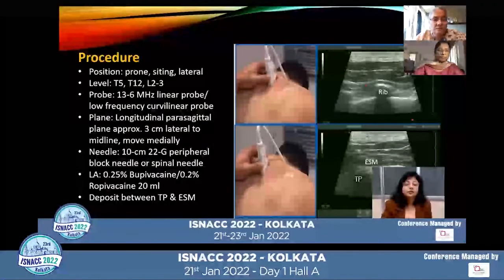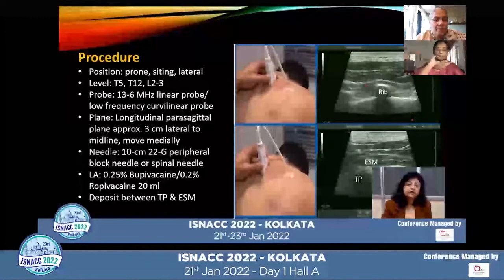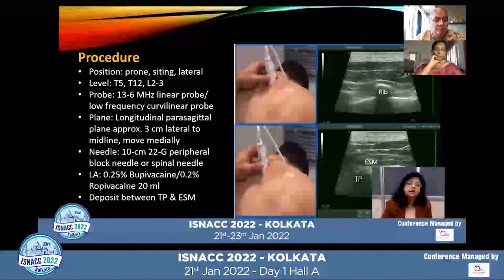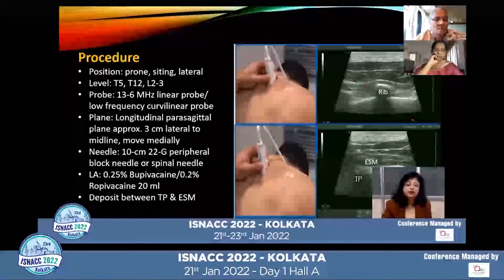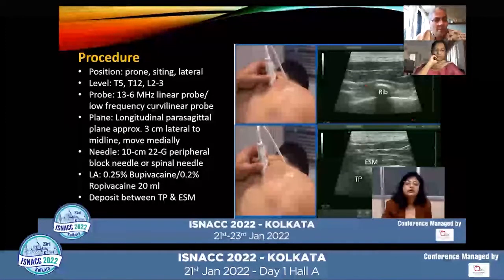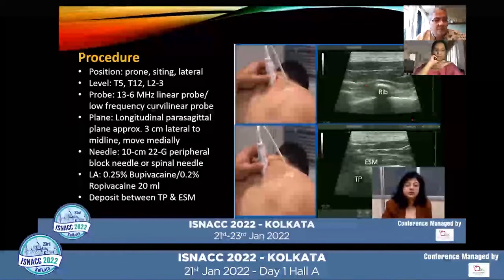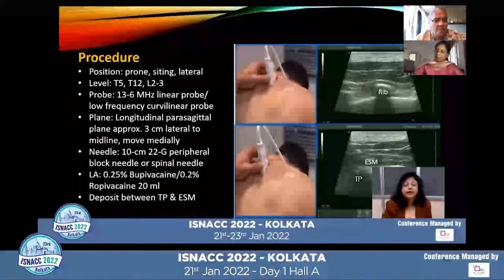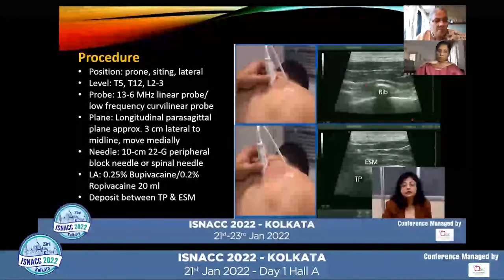The erector spinae block can be performed in prone, sitting, or lateral positions. The level of the block depends upon the surgical indication. It can be performed by using a high-frequency linear probe, especially for the thoracic region, and a low-frequency curvilinear probe for the lumbar region.